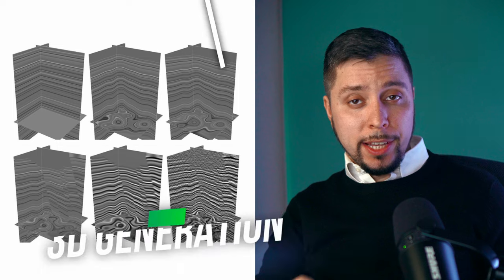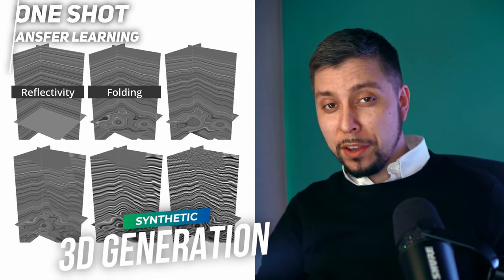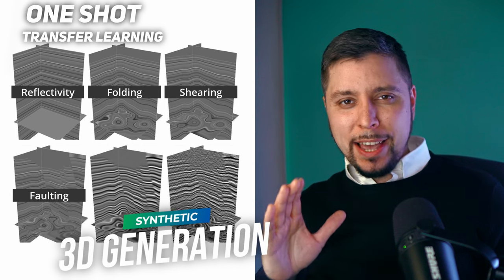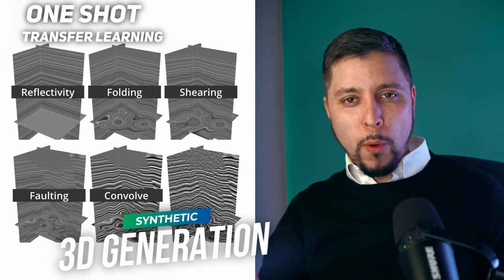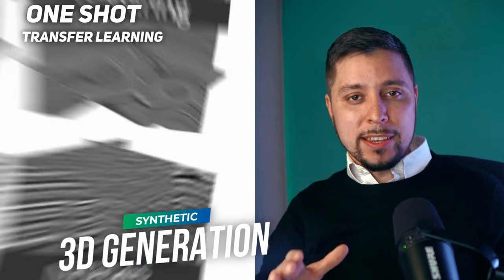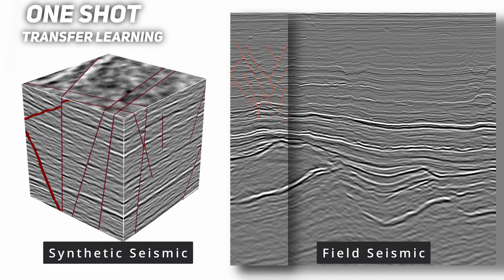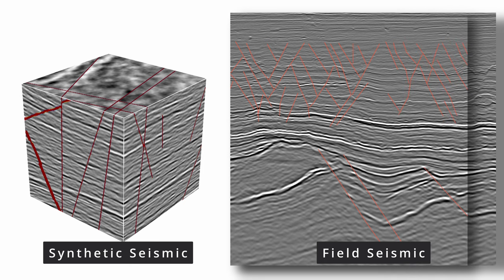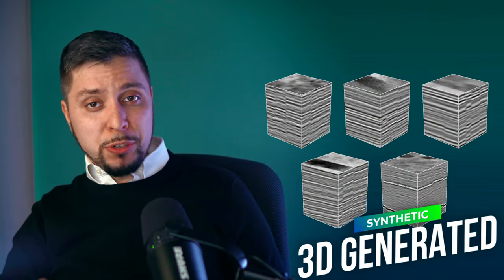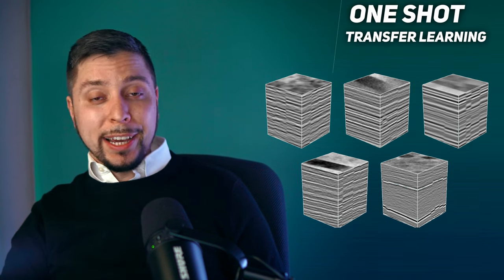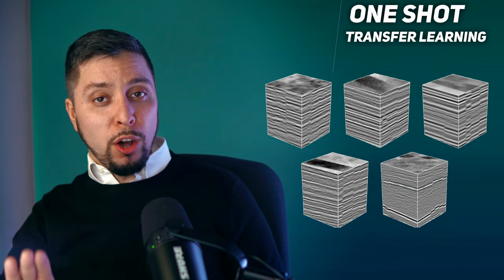To create a synthetic dataset for neural network training, we use comprehensive forward modeling. The synthetically generated dataset does not have the same problems with label quality and dataset size as manual interpretation does. In general, any geological environment can be approximated to some degree, which is sufficient to train a neural network with useful features. As a result, we have hundreds of thousands of unique 3D data samples that provide a clear fault definition free of subjective view.